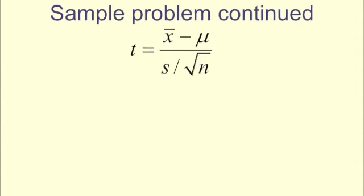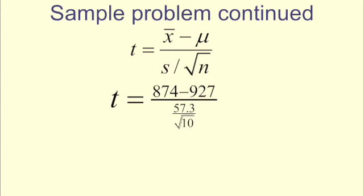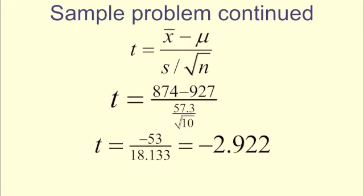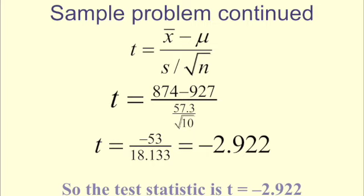So here we have the formula for our t-distribution. We substitute in our sample mean minus the population mean over our sample standard deviation divided by the square root of n, and we get negative 2.922. Remember, this is a test statistic, so we're going to a t-table, not a z-table.